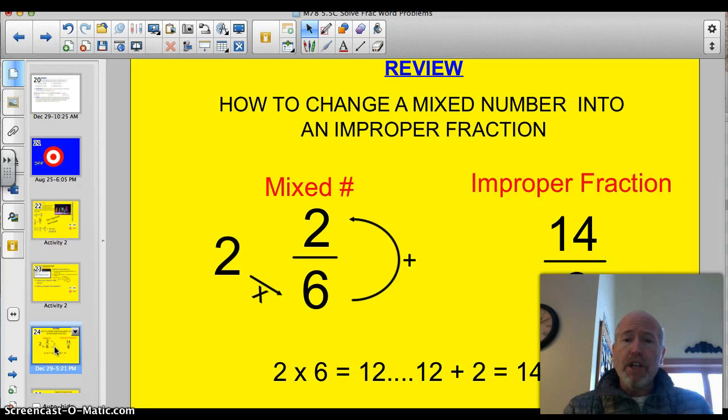Quick review. How to change a mixed number into an improper fraction. I did this last night. I want to do it again. Here we have 2 and 2/6 as a mixed number. 2 times 6 is 12, plus the 2 on top makes 14/6. 2 times 6 is 12. 12 plus 2, 14 I wrote down there as well.